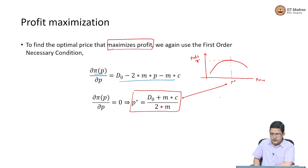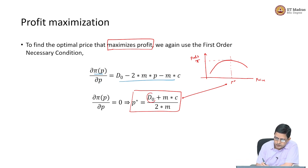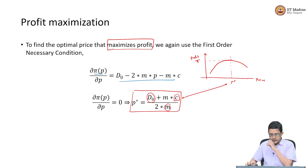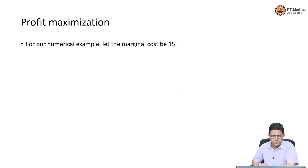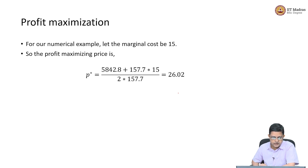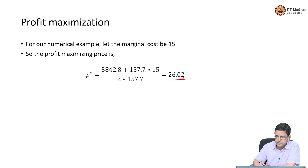For our numerical example, I already know D₀, the market size, and the slope M. If I assume that the marginal cost C is 15, then the optimal profit-maximizing price turns out to be 26.02.